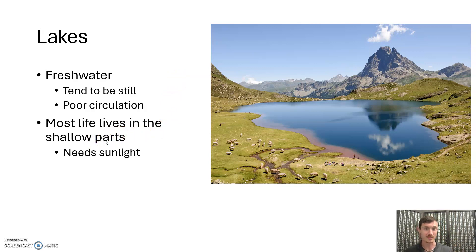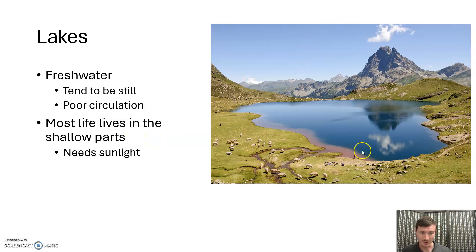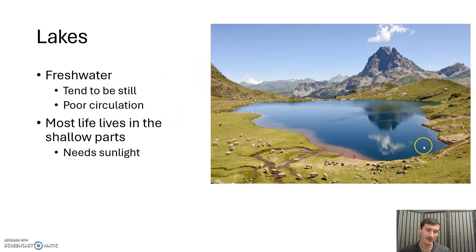Two reasons for this: those areas tend to be better circulated and moved around by wind, as opposed to the bottom, which can get boggy and anoxic. And because sunlight does not penetrate all the way to the bottom of every lake — sunlight is going to penetrate down about 30 to 100 meters max. As a result, we're going to get most of the life around the edges in the shallower parts.